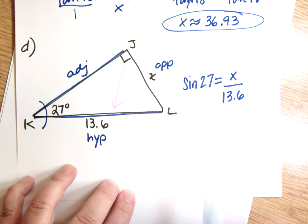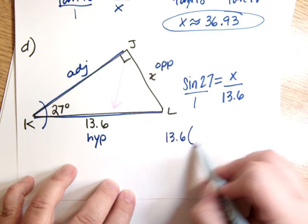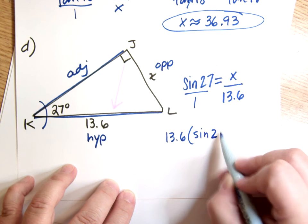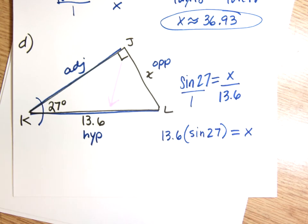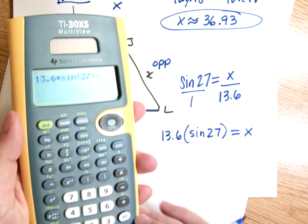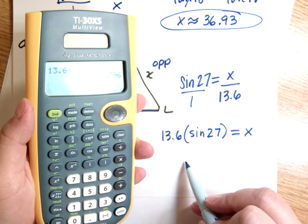So I've got, sorry if I'm making you seasick here. Sine 27 equals opposite over hypotenuse. Then I'm going to cross multiply. When I cross multiply, I get 13.6 times sine 27 equals X times 1. So is X alone? Yes. That means I'm ready for the calculator. So 13.6 times sine of 27 gives me 6.17. Now let me point out to you one thing here.